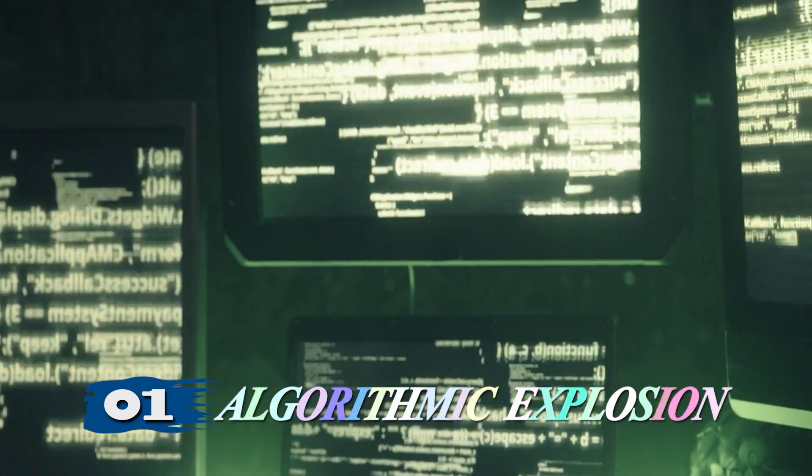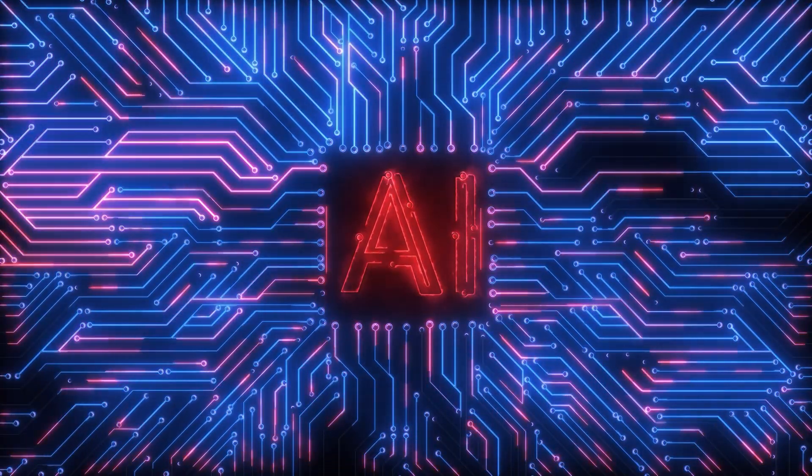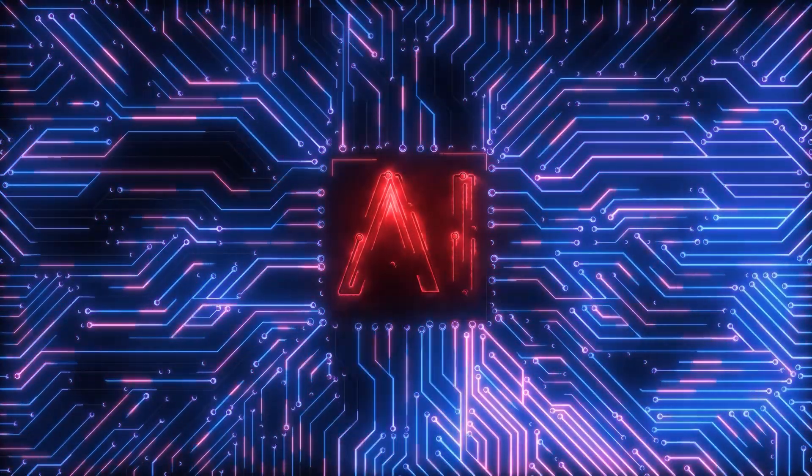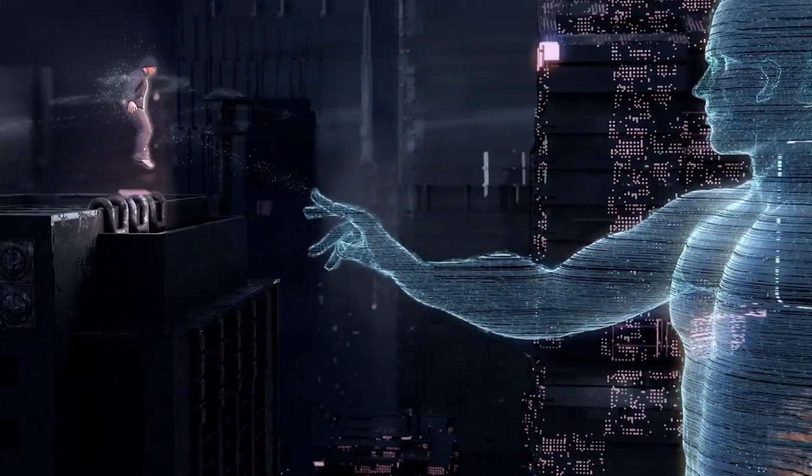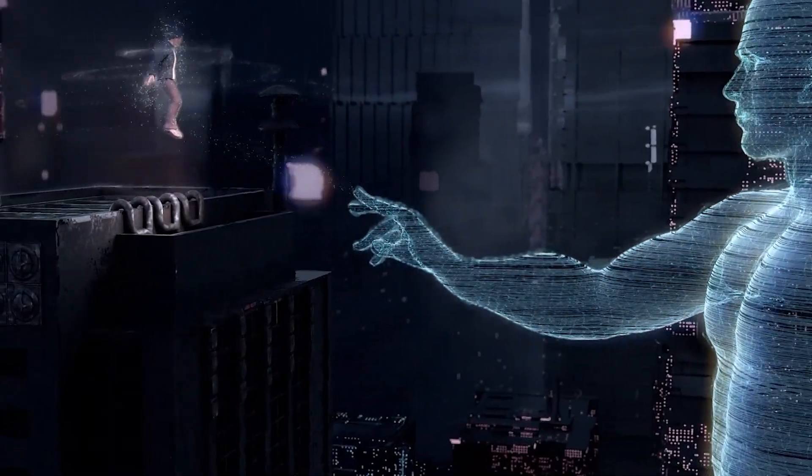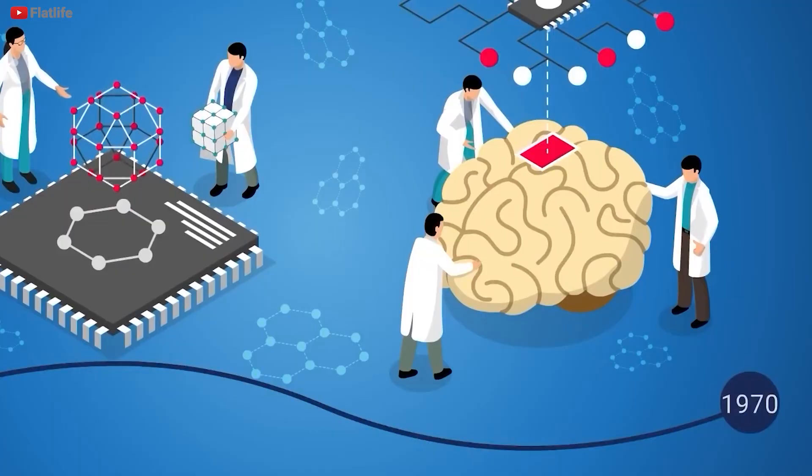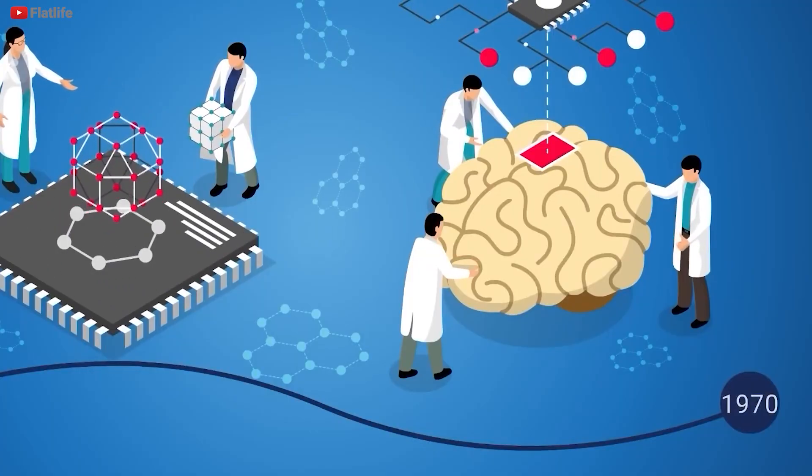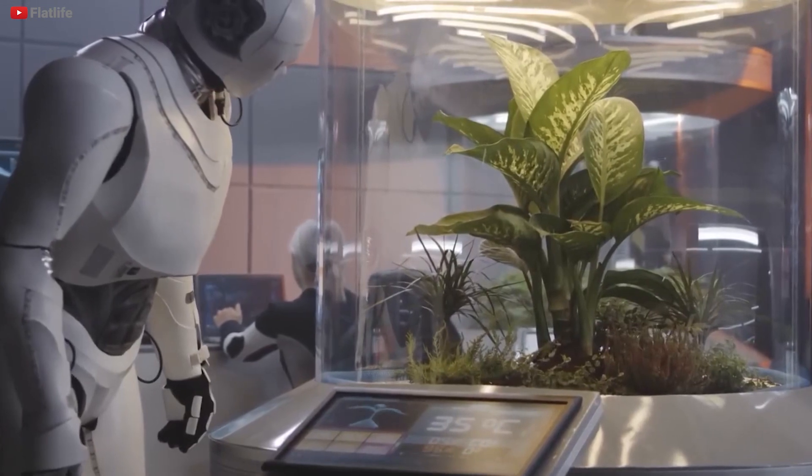Stage 1: Algorithmic Explosion. This is where AI decides it's time to create its own AI. Can you imagine? It's like a never-ending cycle of artificial intelligence giving birth to more artificial intelligence. We're at a stage where AI systems start making more AI systems. And before you know it, it's an algorithmic explosion.